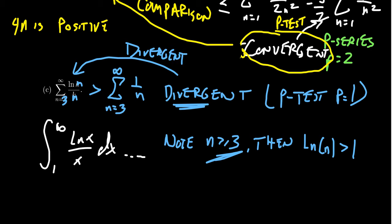This shows that the series starting at n equals three is divergent, but as we noted, the initial value has little significance. Since it diverges starting at three, it diverges starting at one as well. Comparing to the harmonic series, which is divergent, and finding our series is larger, gives us divergence.